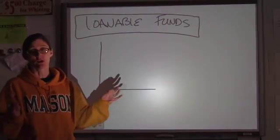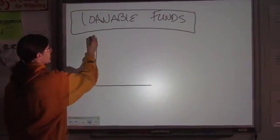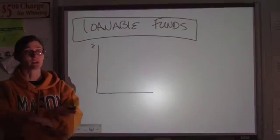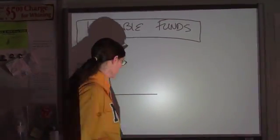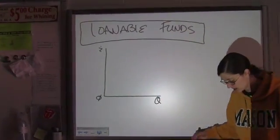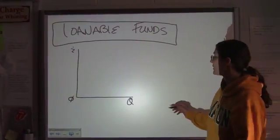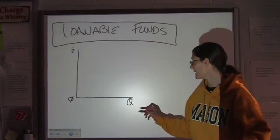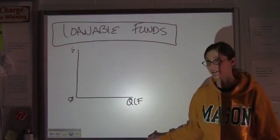First thing you have to do on a graph is label your axes. Again, price on the vertical axis is going to be the interest rate, same as the money market. Zero along the bottom. You have to have quantity, price and quantity. It's kind of a running theme here. And now we're talking about not the quantity of money, but the quantity of loanable funds. You can just put QLF at the bottom.